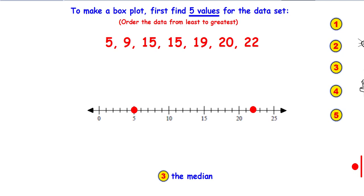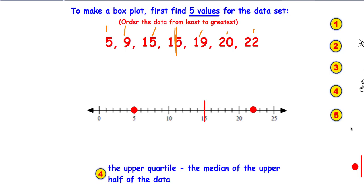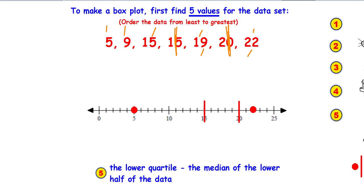Then find the median — the number that's in the middle. Working my way in, the median is 15, so I'm going to put that line on 15. Now I'm going to find the upper quartile, which is the median of the larger numbers. My upper quartile is 20, so I put that line on 20. The lower quartile is the median of the lower half of the data. I can't use 15 because it is the median — so I'm stuck with the remaining three numbers. Working my way in, the lower quartile is 9.